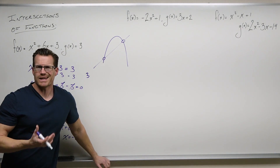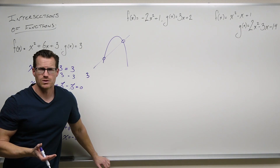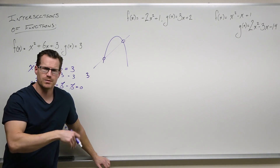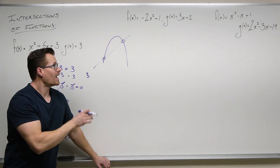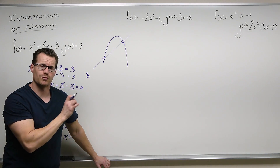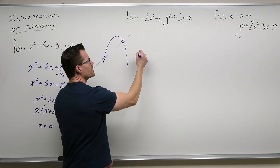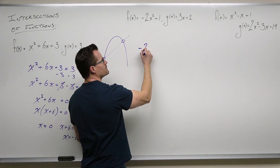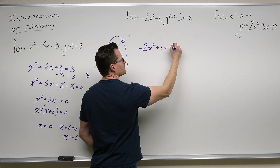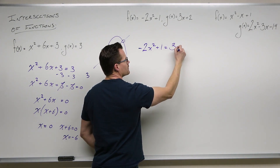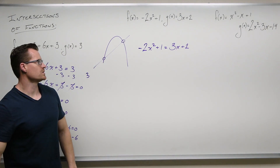If this intersects, that's about where it's going to be — a downward opening parabola intersecting some sort of a line. And that's exactly what we're finding. How to find that is: set the functions equal. So we'd have negative two x squared plus one equals three x plus two.